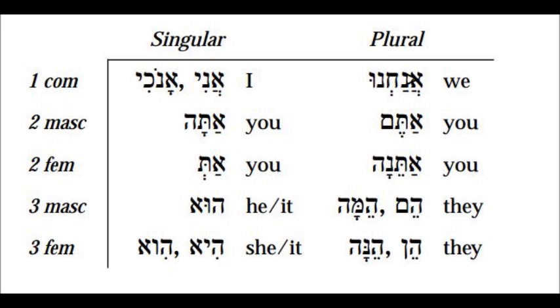Anything that has logical and predictable patterns is easier for the memory to recall. Now look at the chart for the Hebrew IPPs, or the independent personal pronouns, and let's see what predictable patterns we can quickly find.